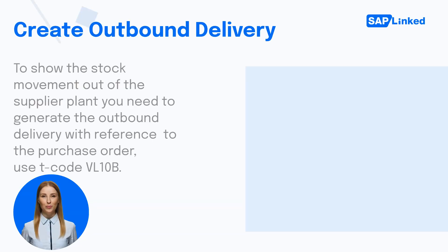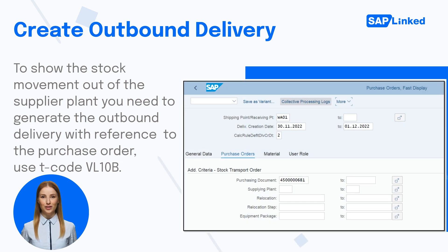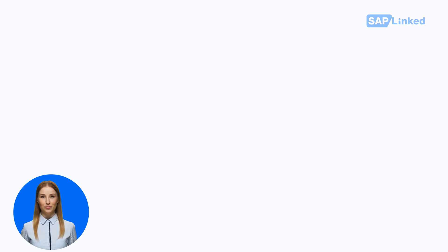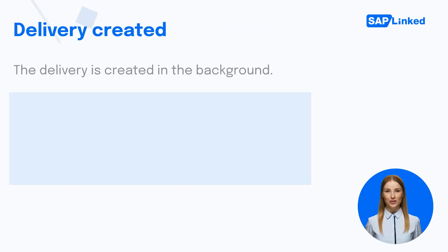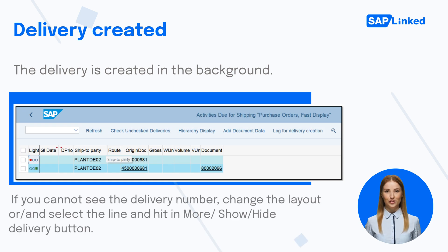To show the stock movement out of the supplier plant, you need to generate the outbound delivery with reference to the purchase order. Use transaction code VL10B. Input the purchasing document number or other information, then click Execute. Select the line which you want to process and click on the Background button. The delivery is created in the background. If you cannot see the delivery number, change the layout or select the line and hit More > Show/Hide Delivery button. Please note, to create an outbound delivery, the supplying plant must have enough unrestricted stock. You can check this in Transaction MMBE or look at the stock overview in the purchase order.